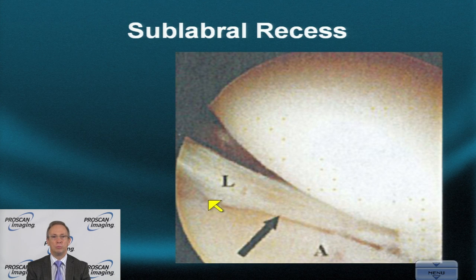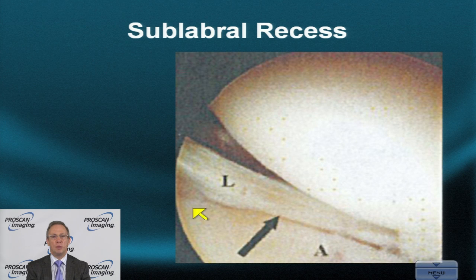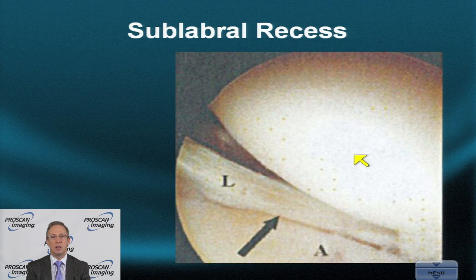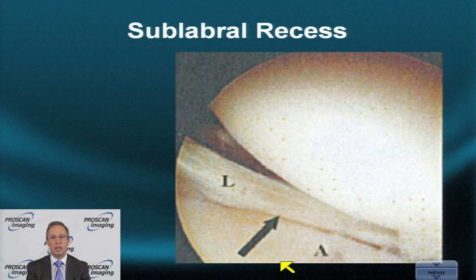Here is the paralabral recess, which deepens as one moves towards the eight o'clock position. The acetabulum is visible, and just below the mid-acetabulum or nine o'clock position, the labral sulcus becomes apparent. The femoral head is to the viewer's right, with anterior acetabulum, posterior acetabulum off-screen, superior to the left, and inferior to the right.